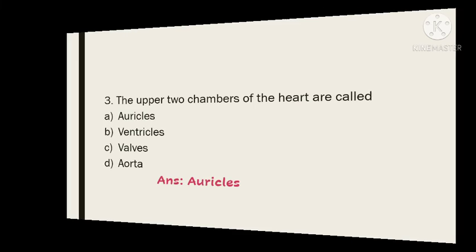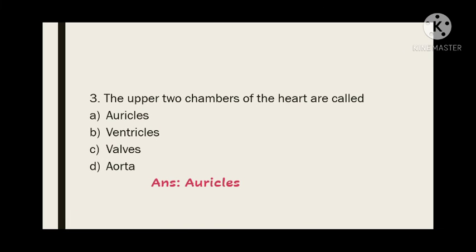Number 3. The upper two chambers of the heart are called: A. Auricles, B. Ventricles, C. Valves, D. Aorta. Answer: Auricles.